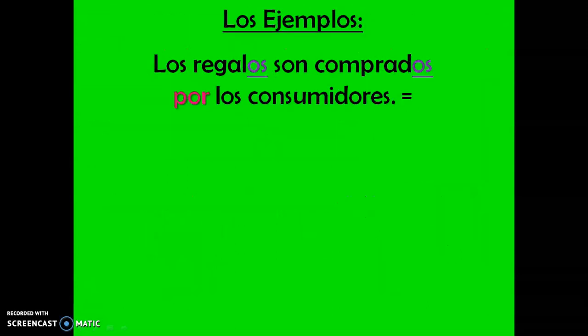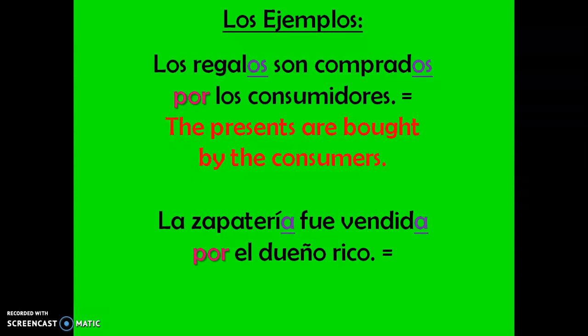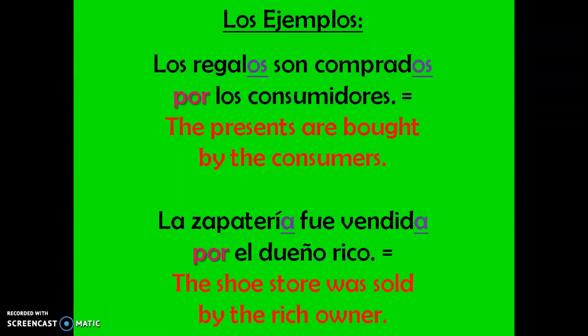Now let's look at some example sentences. Read those together in Spanish and figure out what they mean in English. Feel free to pause the video if you want to check yourself. Los regalos son compradas por los consumidores — the presents are bought by the consumers. Muy bien. Next example: la zapatería fue vendida por el dueño rico — the shoe store was sold by the rich owner.